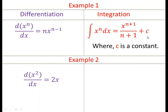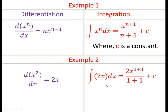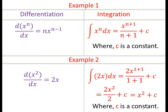Example 2: The derivative value of x² with respect to x is equal to 2x. On the other hand, the integrated value of 2x with respect to x is equal to 2·x^(1+1) / (1+1) + c, which equals 2x²/2 + c, and that is equal to x² + c, where c is a constant.